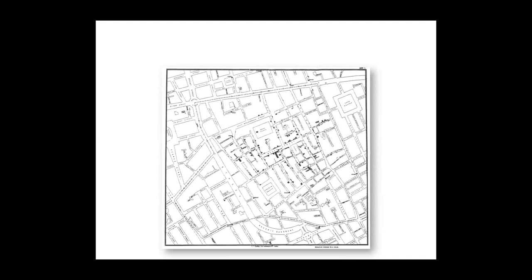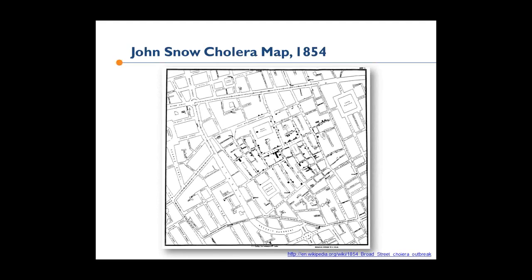So here is my framework — we're going to go through the list and talk about what we can learn from each one of these visualizations. At number five is the John Snow cholera map from 1854.